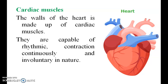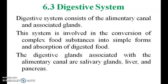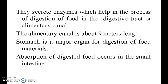The walls of the heart are made up of cardiac muscles. They are capable of rhythmic contraction and are continuous and involuntary in nature. The digestive system consists of the alimentary canal and associated glands. This system is involved in the conversion of complex food substances into simple forms and absorption of digested food. The digestive glands associated with the alimentary canal are the salivary glands, liver, and pancreas. They secrete enzymes which help in the process of digestion. The alimentary canal is about 9 meters long.